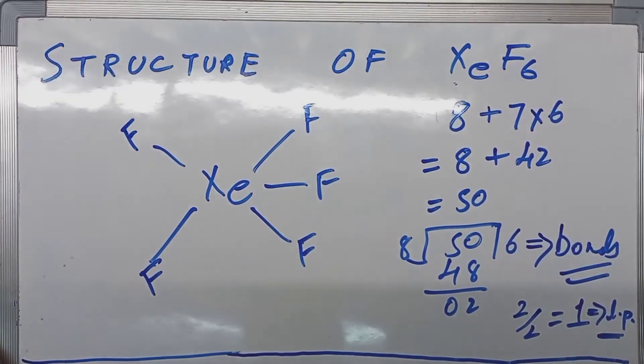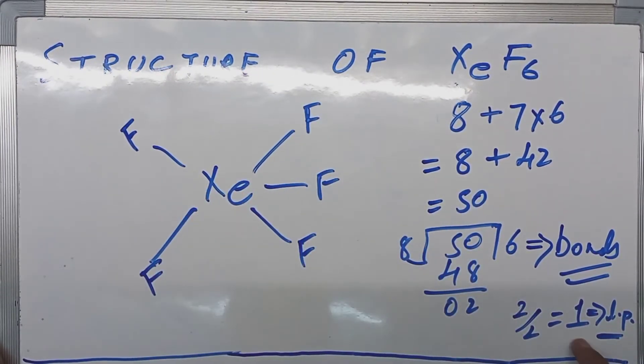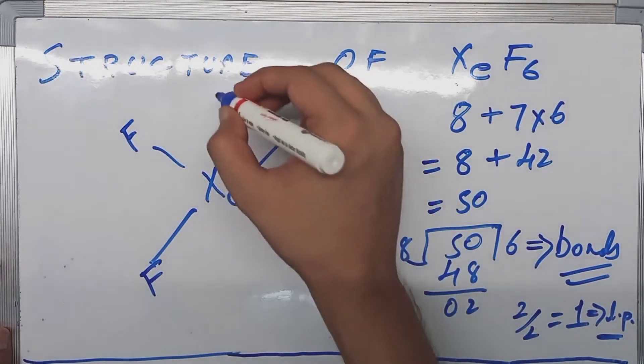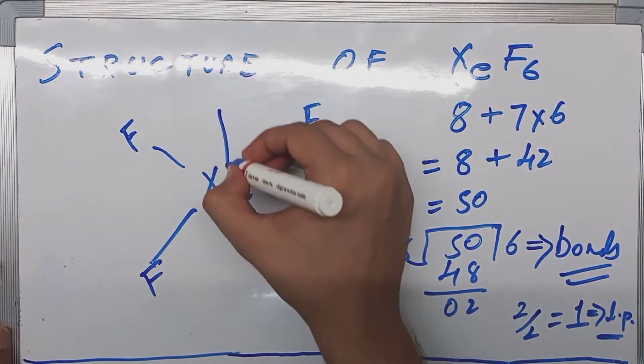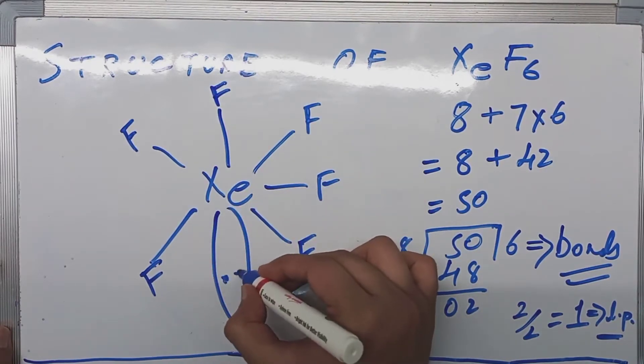This one is left. We had 6 bonds, and we have 5 bonds, and we have 1 extra lone pair also. So here goes another fluorine, and here goes your lone pair.